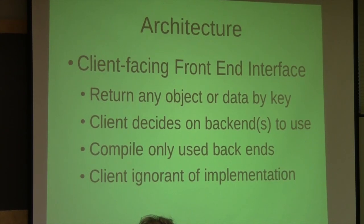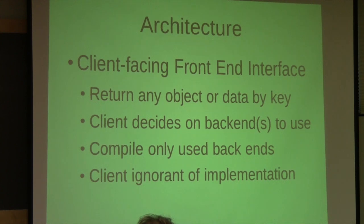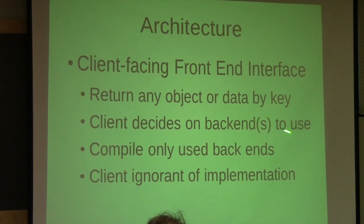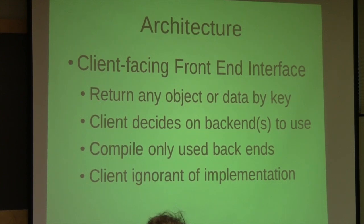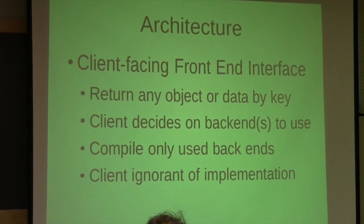The architecture I came up with has a frontend which is client-facing. The property system uses a string key to fetch values. The client decides which backend to use - database, environment, etc. - and in what order to search them. Only the backends being used would be compiled, and the client would be ignorant of the implementation. Specifically, I'm using Boost.Any to do the magic here - the client needs to remain ignorant of that fact. I almost achieved that, but not quite.